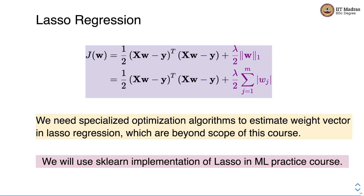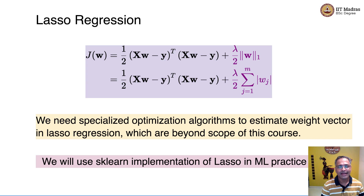Now let us look at another type of regularization called L1 regularization, which gives us the lasso regression model. The only change from L2 regularization is that instead of using the second norm of the weight vector, we use the first norm. The first norm is calculated by summing up the absolute values of the individual weights from W1 to Wm. However, the lasso regression model's loss function is not differentiable at all points because of this penalty term. Hence, we need specialized optimization algorithms to estimate the weight vector in lasso regression. These algorithms are beyond the scope of this course — we will use a library implementation of lasso in the machine learning practice course.